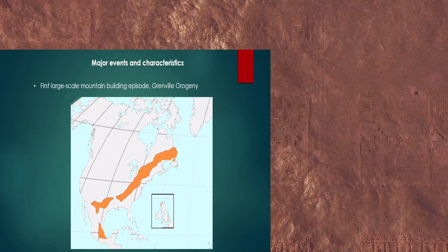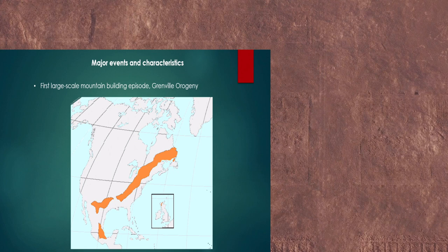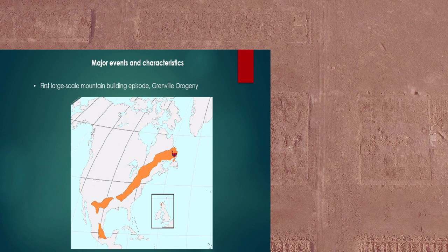The Mesoproterozoic Era also saw the first large-scale mountain building episode, which consists of the Grenville Orogeny, and that's pictured here in orange. This is the Grenville Orogeny which resides in modern day North America.